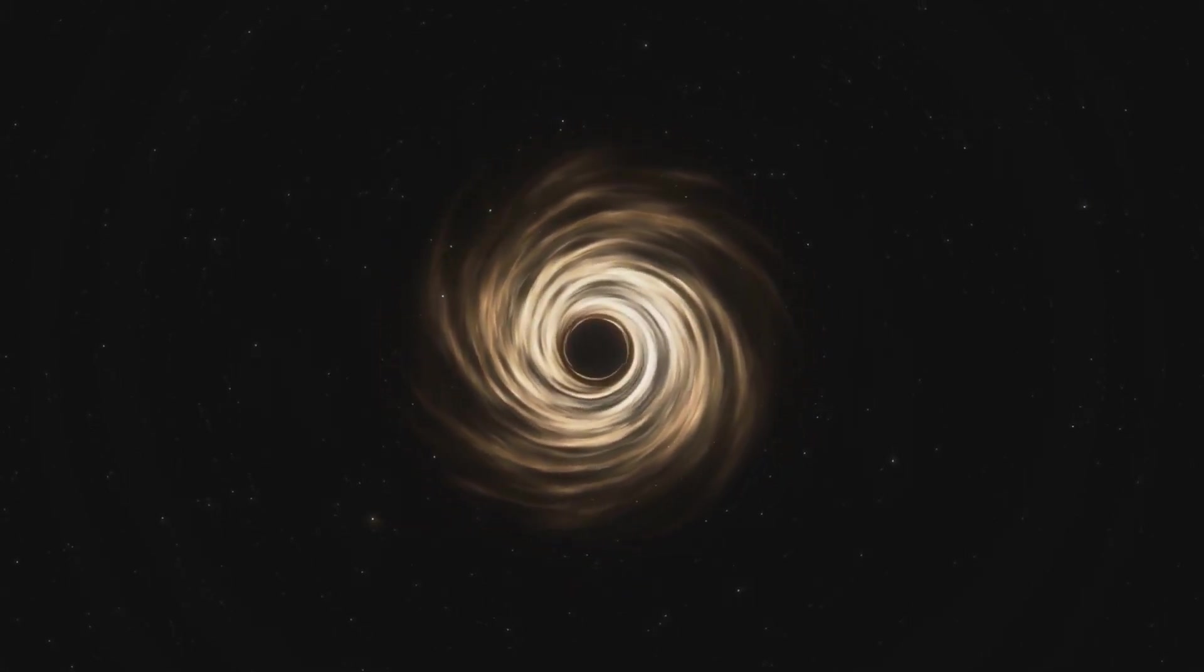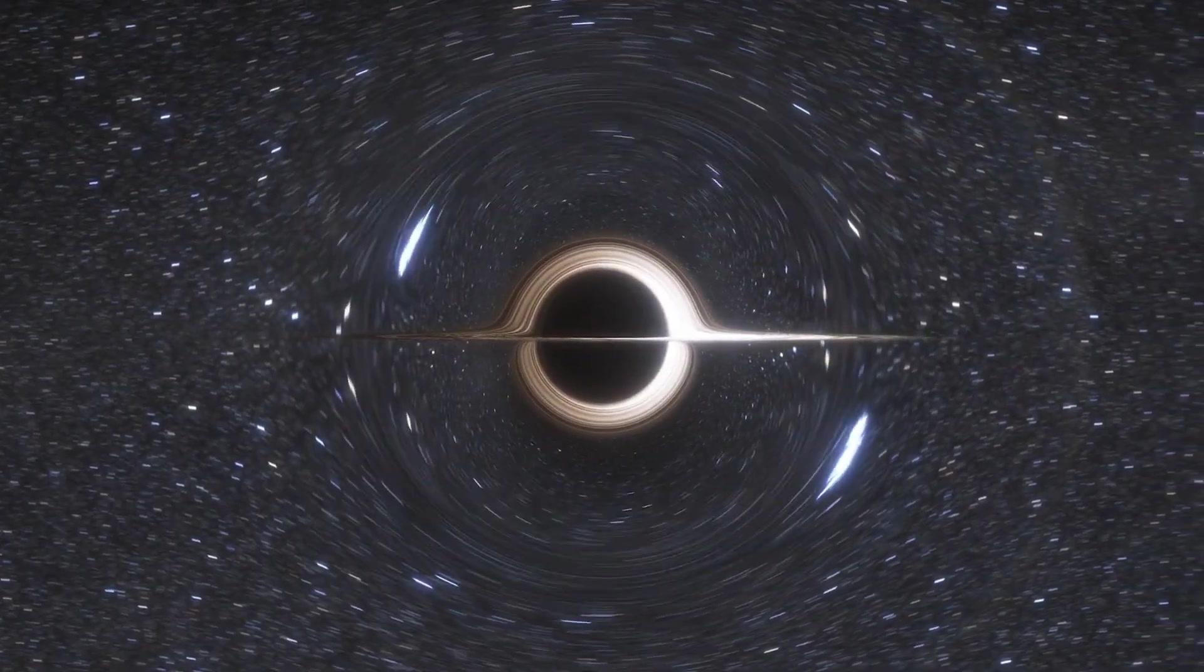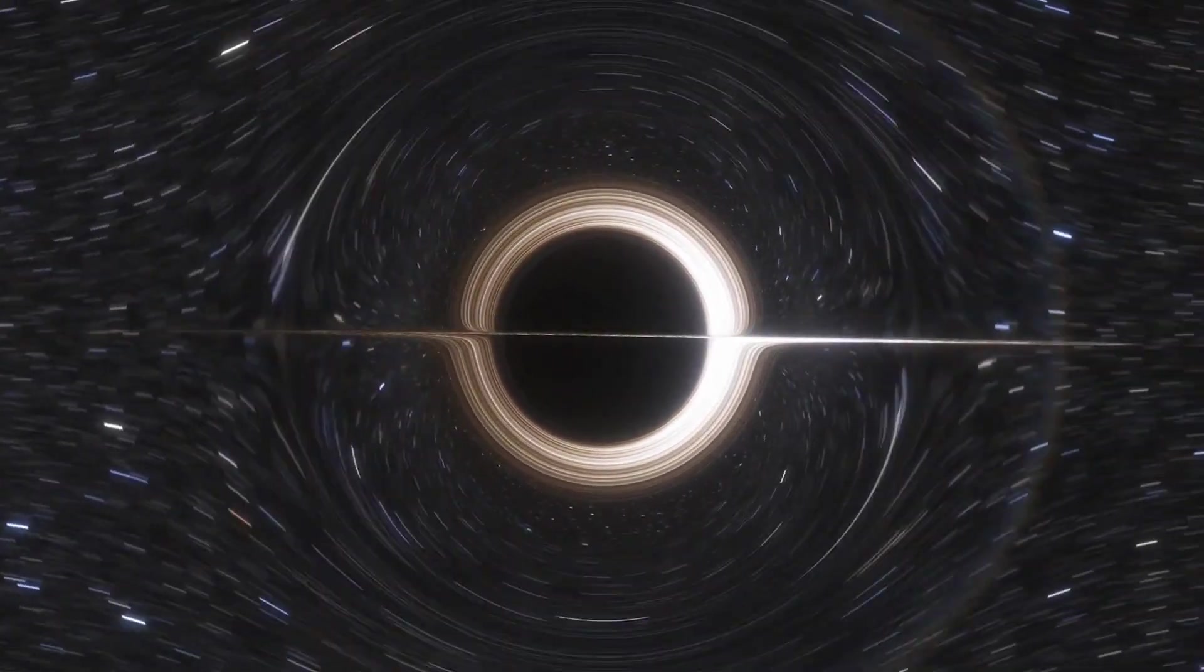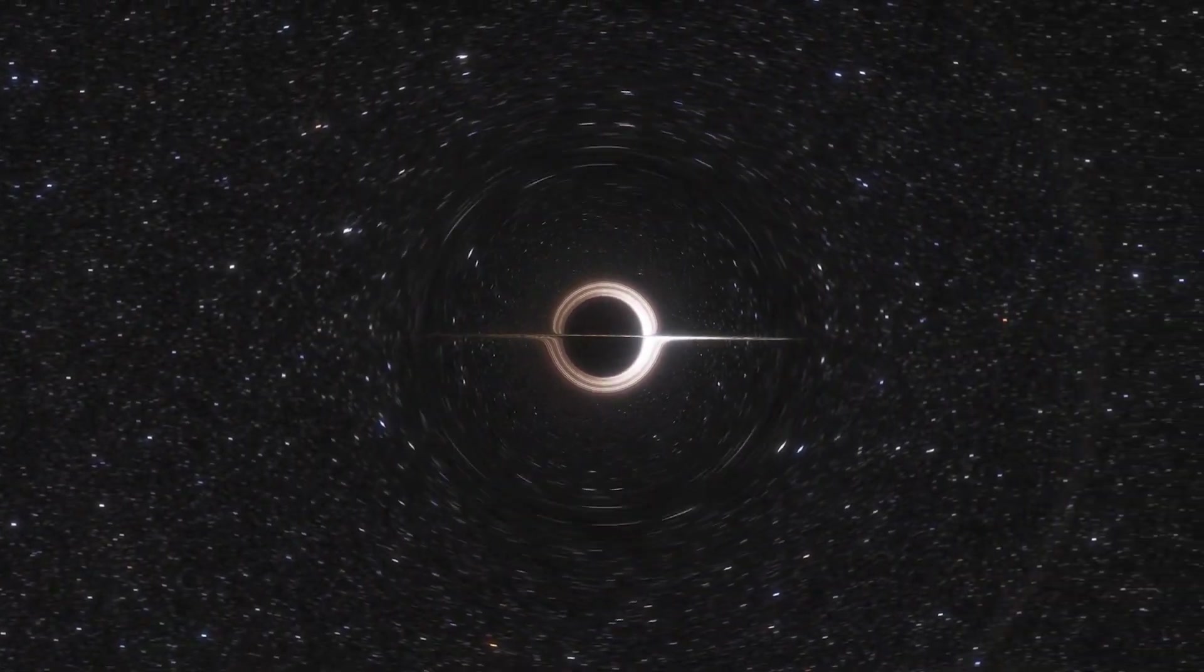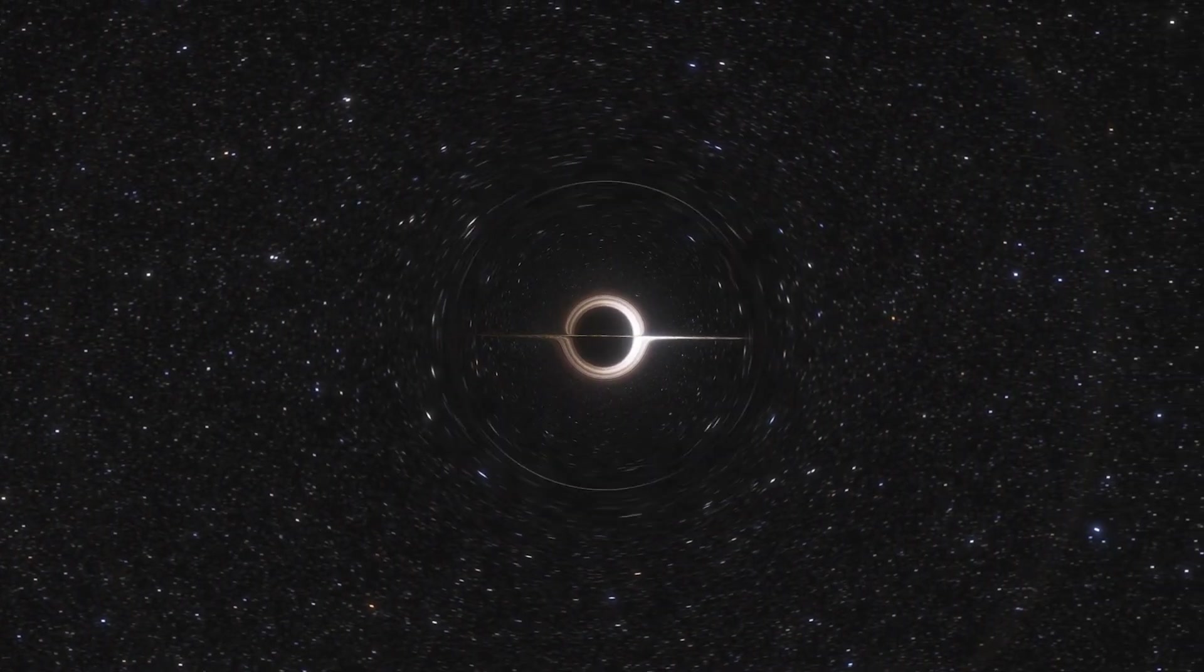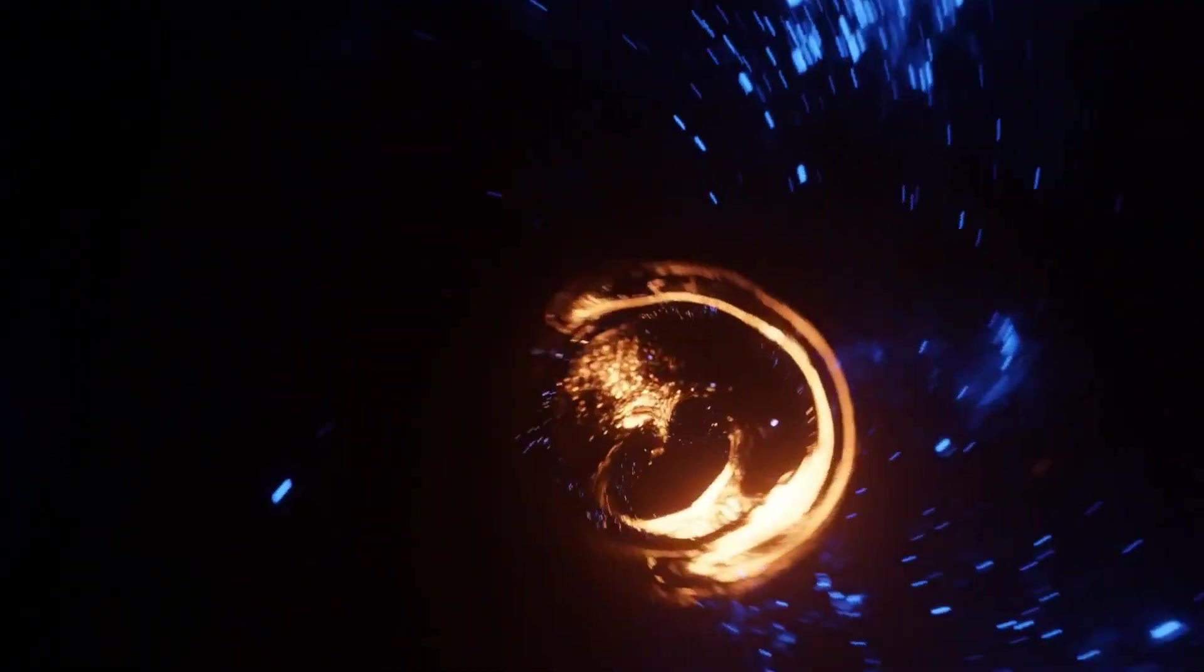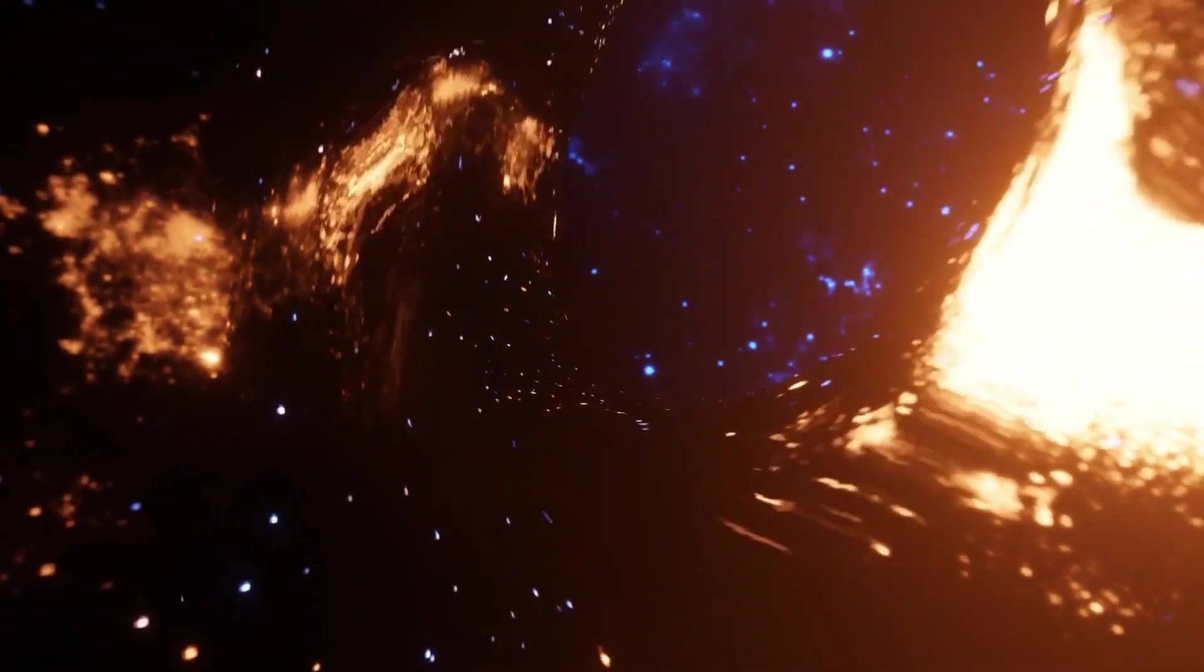The immense gravitational pull of a black hole distorts space and time around it, a phenomenon known as gravitational lensing. This means that the space closer to a black hole moves slower than the space farther from it. This is an effect of what Einstein called space-time curvature. Black holes, with their vast gravitational influence, are not just objects in space, they are shapers of space, and their presence profoundly affects their surroundings.